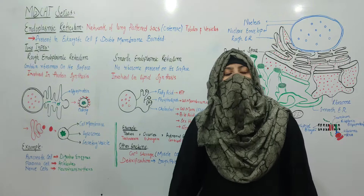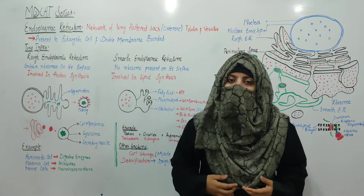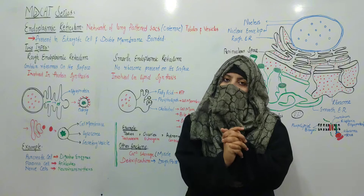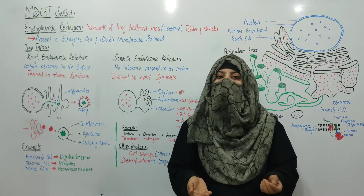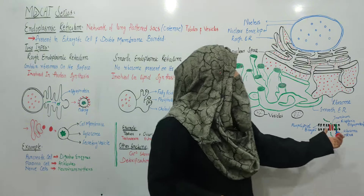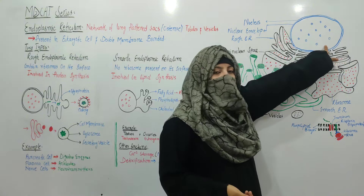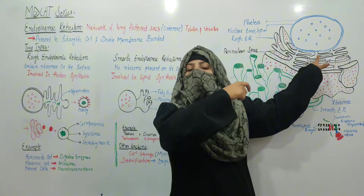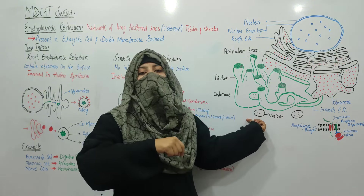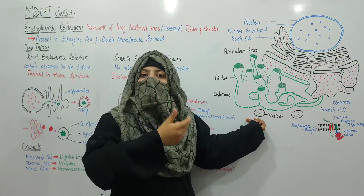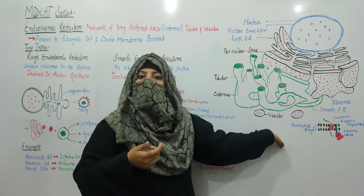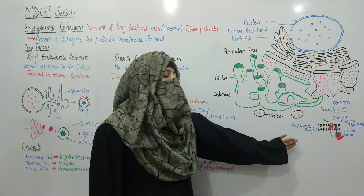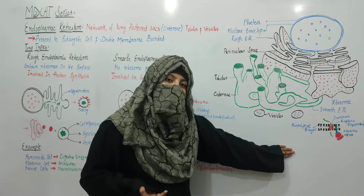Overall, the endoplasmic reticulum — both types — provides mechanical support to the cell because it is extended throughout the cell. The network starts from the nucleus and ends at the cell membrane. Because it is extended throughout the cell, mechanical support is provided to your cell.